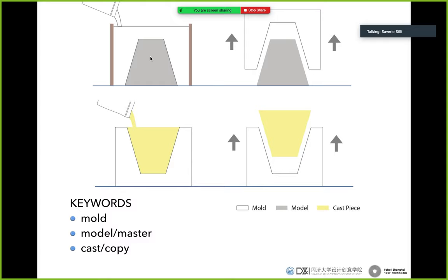It could be, for example, an artifact from an archaeological site, whatever. Or it could be something that you 3D print. It can also be something that you CNC mill, like the one that we will make.